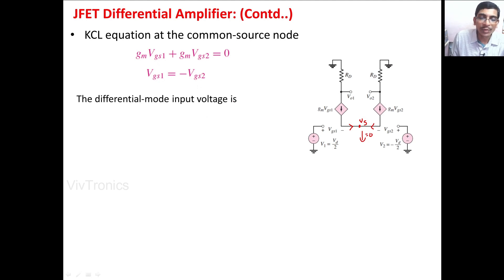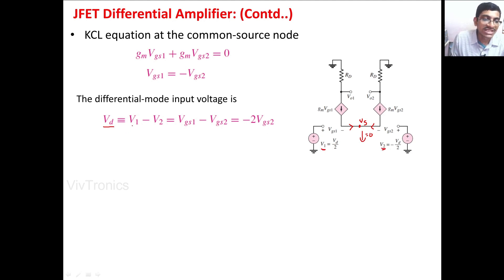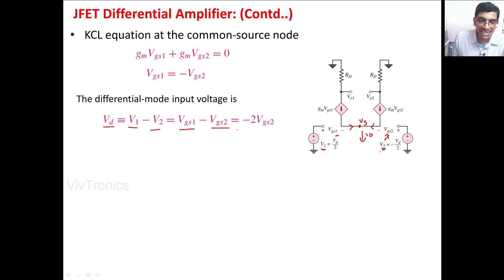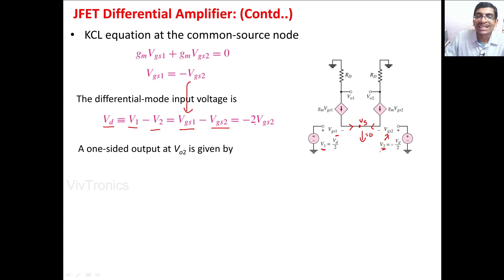The differential mode input voltage Vd is equal to the voltage difference between V1 and V2, which is V1 - V2. Since V1 equals VGS1 and V2 equals VGS2, because there is no voltage-dropping component in this circuit, we can represent VGS1 = -VGS2. Therefore, Vd = -VGS2 - VGS2, which becomes -2*VGS2. The one-sided output voltage V02 can be written as V02 = -GmVGS2 * Rd, since the output voltage is the voltage across the Rd resistance.